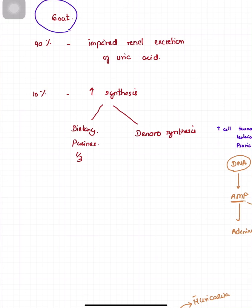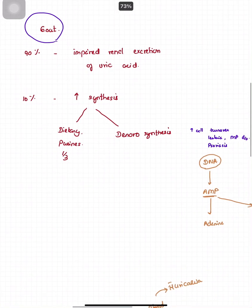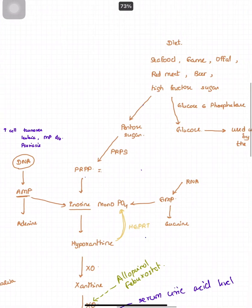In the pathophysiology, 90% of hyperuricemia and gout occurs due to impaired renal excretion of uric acid, whereas 10% is due to increased synthesis or increased formation of uric acid. It may be from dietary purines in one third of cases, and it may be from de novo synthesis from DNA and cellular breakdown.